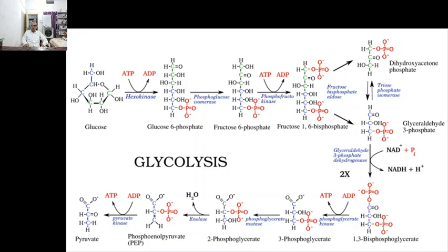Autocrine motility factor receptor is overexpressed in various metastatic tumors and is correlated with poor prognosis. The presence of GPI in serum and urine is also associated with cancer progression and indicates poor prognosis. Note that for exam purposes, these recent findings about glycolytic enzymes are not strictly necessary — you mainly need to memorize the glycolytic pathway itself. The expression of PGI is stimulated by hypoxia, and GPI functions as a cytokine extracellularly associated with aggressive malignant behaviors.